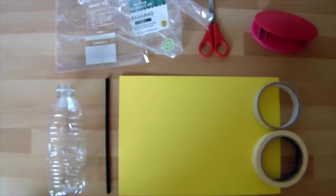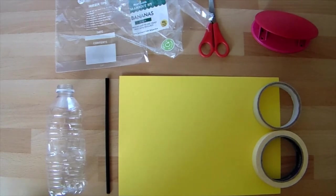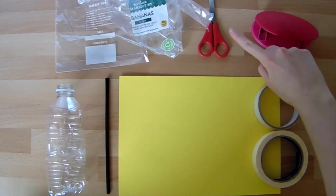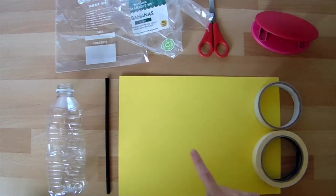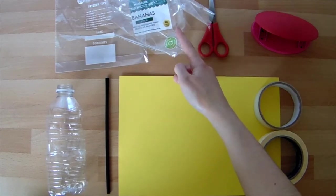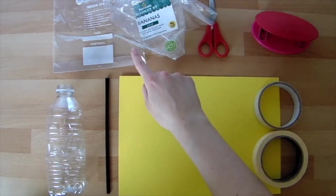Here are all the different materials you're going to need to make your membranophone. You'll need a hole punch, some tape, a pair of scissors, a piece of card, a straw, a plastic bottle, and some thin plastic like fruit wrappers or sandwich bags.